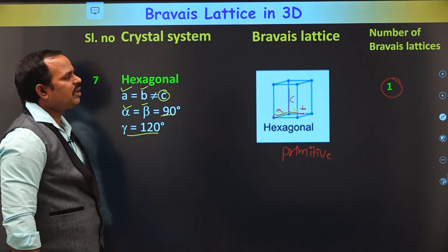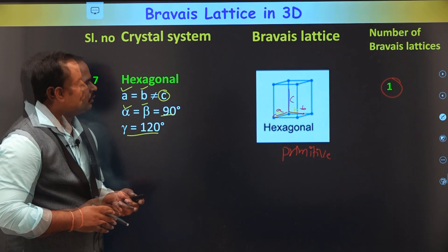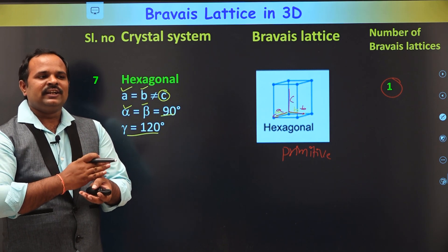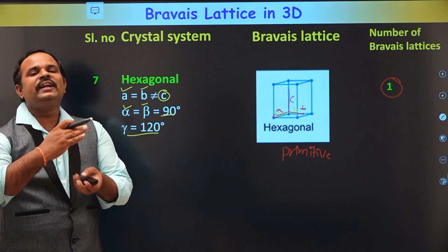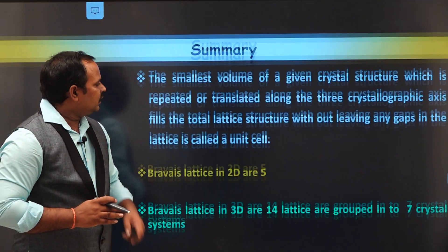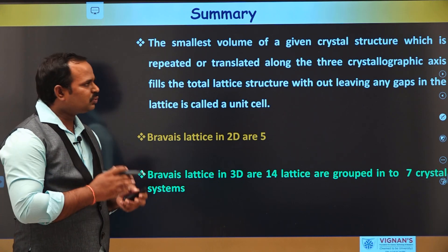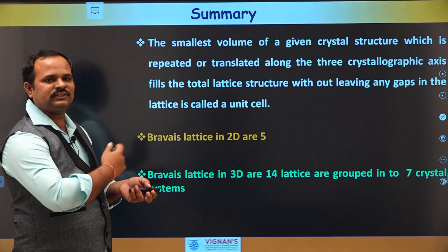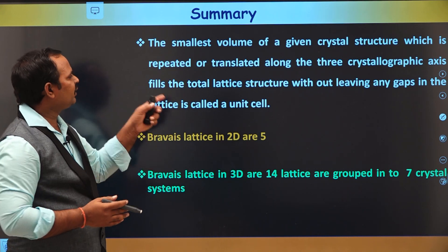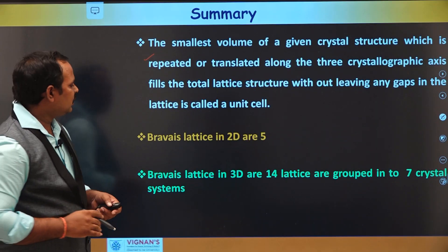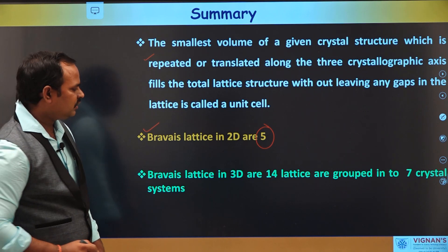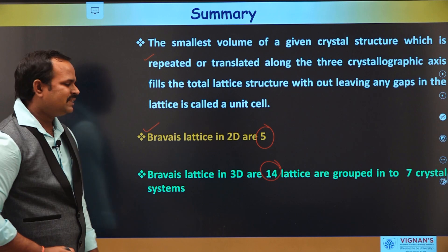So the total number of Bravais lattices in space is only 14. The lattice points can be arranged in space such that they follow the periodic property and the environment about each and every lattice point is identical. In summary: the unit cell is the smallest volume of the crystal and is the building block of the crystal. The number of Bravais lattices in 2 dimensions is 5, and in 3 dimensions there are 14 Bravais lattices grouped into 7 crystal systems.